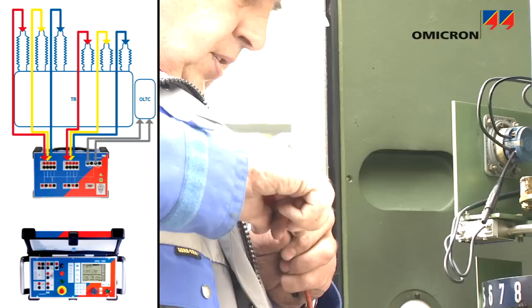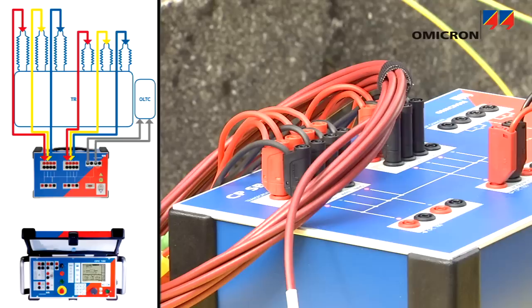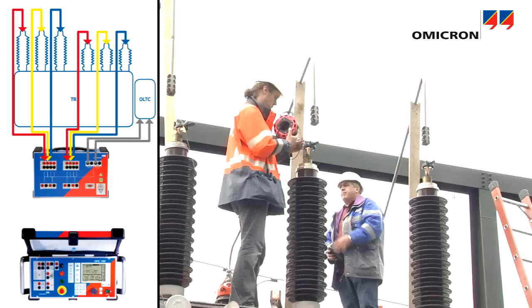The switchbox is wired to all three phases of the transformer, as well as to the tap changer's up and down commands. The CPC's outputs and measurement inputs are connected to the switchbox. Test connections are only made once.